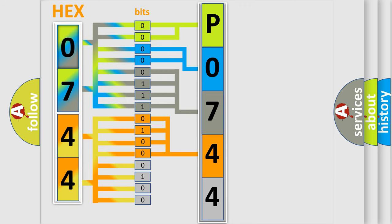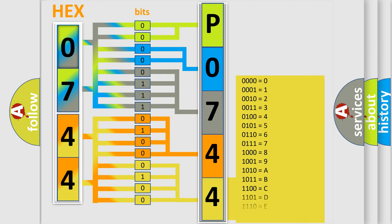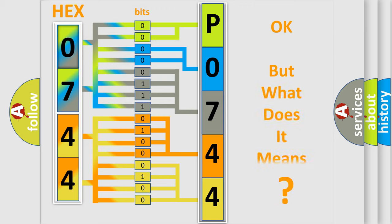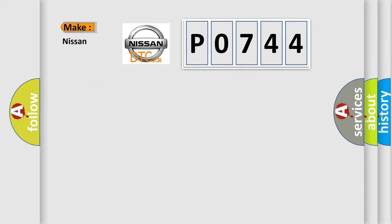A single byte conceals 256 possible combinations. We now know in what way the diagnostic tool translates the received information into a more comprehensible format. The number itself does not make sense to us if we cannot assign information about what it actually expresses. So, what does the diagnostic trouble code P0744 interpret specifically for Nissan car manufacturers?